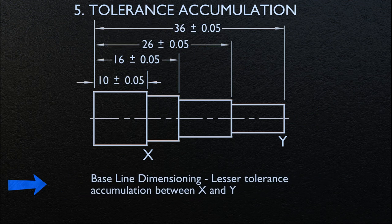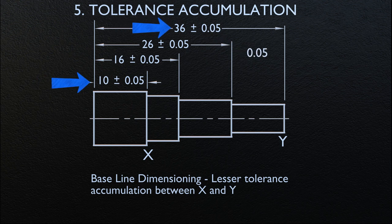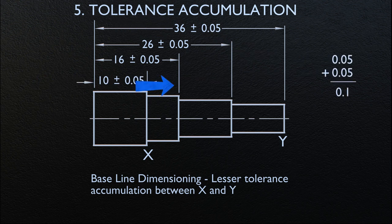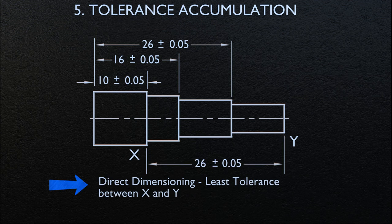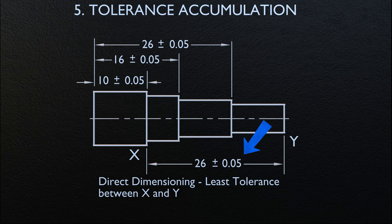For baseline dimensioning, the maximum variation between two features is equal to the sum of the tolerances on the two dimensions from their origin to the features. This results in a reduction of tolerance accumulation. As seen in the illustration, the tolerance accumulation between surfaces X and Y is ±0.1. For direct dimensioning, the maximum variation between two features is controlled by the tolerance on the dimension directly between the features X and Y, resulting in the least tolerance — ±0.05.